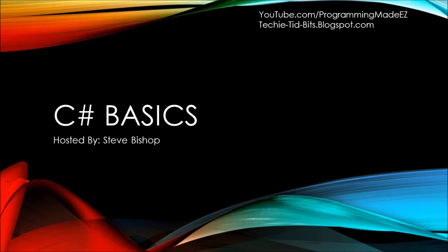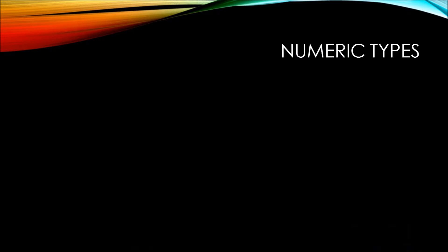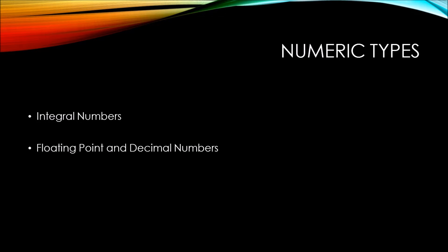In this video of C# Basics, we're going to take a look at numeric types. Numeric types come in three basic forms: integral numbers, floating point or decimal numbers, or boolean.